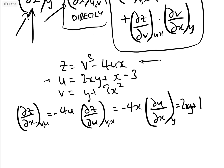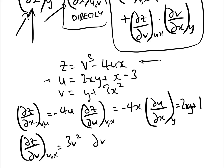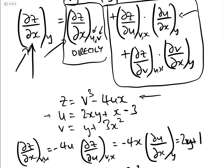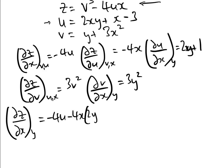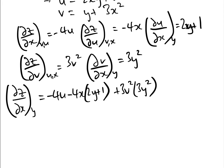Next, dz/dv keeping u and x fixed equals 3v squared. And finally, dv/dx keeping y fixed equals 3y squared. Note: the subscripts indicating which variables are held fixed matter — without them, we'd have the partial derivative of z with respect to x on both sides of the equation, which would be nonsensical. It matters whether you're keeping the other independent variable fixed or keeping the intermediate variables fixed. So dz/dx keeping y fixed equals minus 4u minus 4x times (2y plus 1) plus 3v squared times 3y squared.